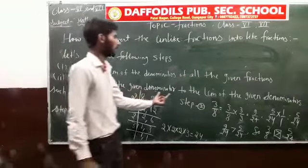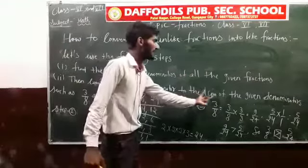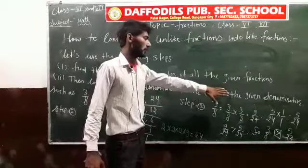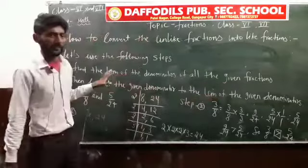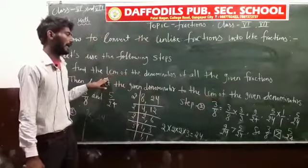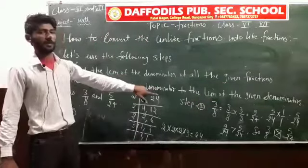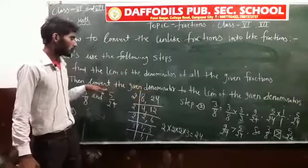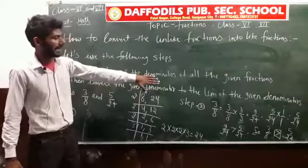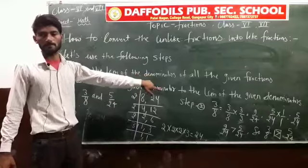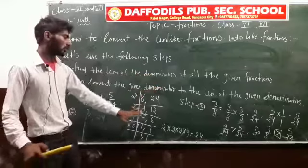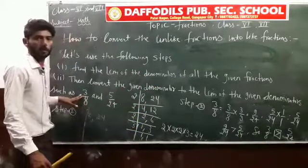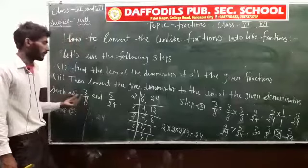Step 2: convert the given denominators to the LCM of the given denominators. So first you find the LCM, and then whatever denominator you have, you make it equal to the LCM. Now let's take an example — your attention should be only on the blackboard.